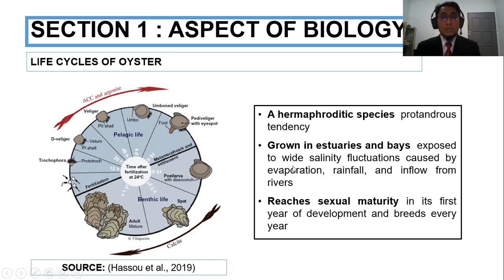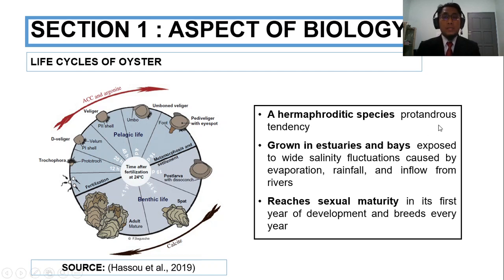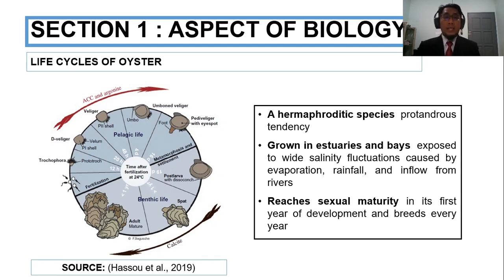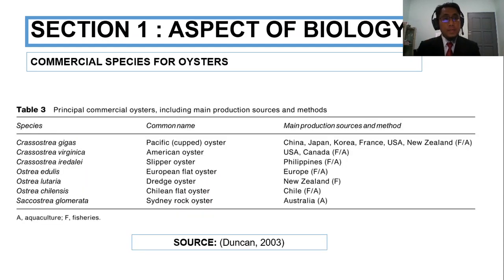Basically, the oyster is a hermaphroditic species, meaning they have both male and female sex. They have a protandrous tendency, meaning they change sex from male to female. The oyster grows in estuaries and bays exposed to wide salinity fluctuations. They can reach sexual maturation during the first year and can breed year after year.